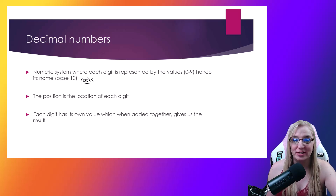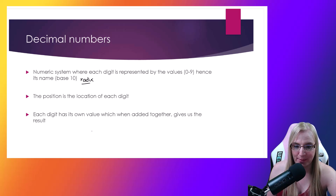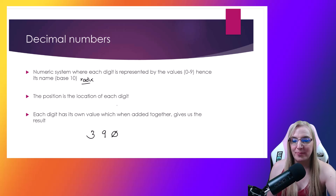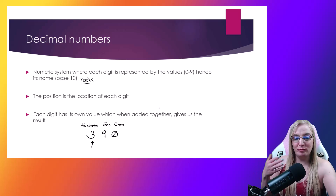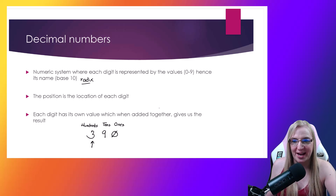Now we have positional value. If we look at the number 390, each of these is a digit, and these are the positions. So this is the hundreds position, then we have tens and ones. In a decimal base 10 number, the positions are hundreds, tens, and ones.